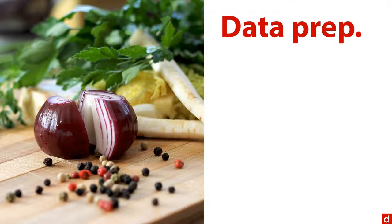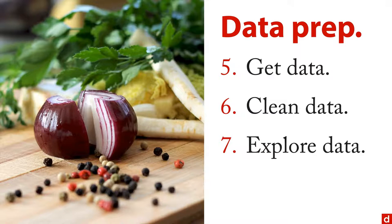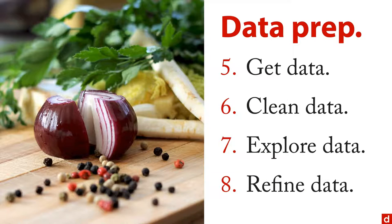Next is the data prep — like food prep, getting the raw ingredients ready. First, of course, you need to get the data, which can come from many different sources and be in many different formats. You need to clean the data, and the sad thing is this tends to be a very large part of any data science project, because you're bringing in unusual data from a lot of different places. You also want to explore the data — see what it looks like, how many people are in each group, the shape of the distributions, what's associated with what. And you may need to refine the data: choosing variables and cases to include or exclude, making any necessary transformations. These steps can bounce back and forth from one to the other.